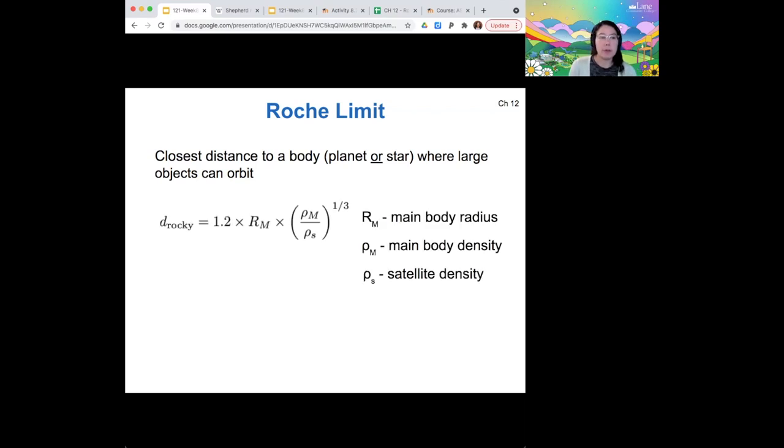There's a different formula for rocky and icy bodies. So here's the rocky body formula. It's given by some coefficient times the radius of the main body, so the planet or the star, times the ratio between the density of the main body divided by the satellite density. So this could be the planet and a moon. And that is all to the power of one-third.